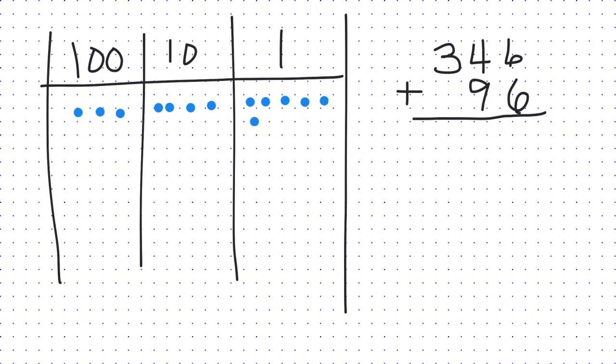Now I need to model that 96, so that's going to be 1, 2, 3, 4, 5, 6, 7, 8, 9, and then 1, 2, 3, 4, 5, 6. So there is our 346 plus 96.